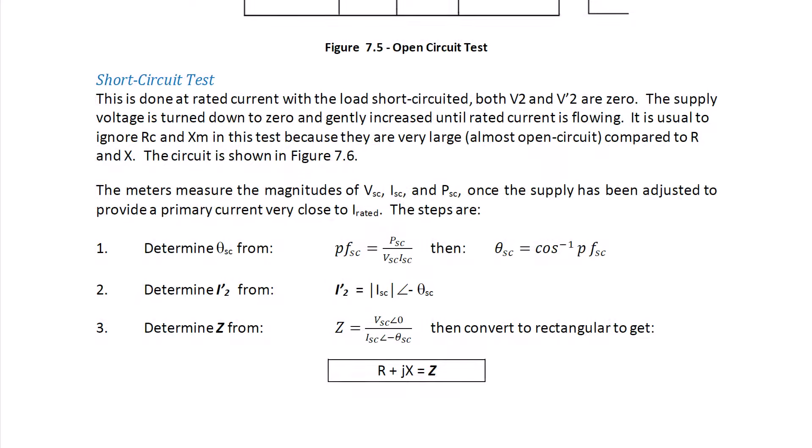Now let's discuss the short circuit test. This is done at the rated current where the load is short-circuited, so both V2 and V2 prime are zero. The supply voltage is turned down to zero and gently increased until the rated current is flowing. It is usual to ignore RC and XM in this test because they are very large, almost open-circuited, compared to R and X.